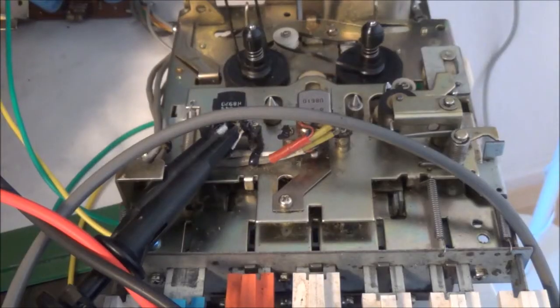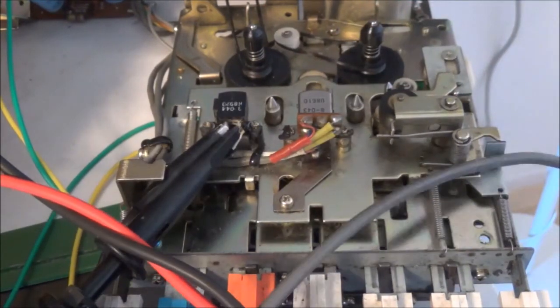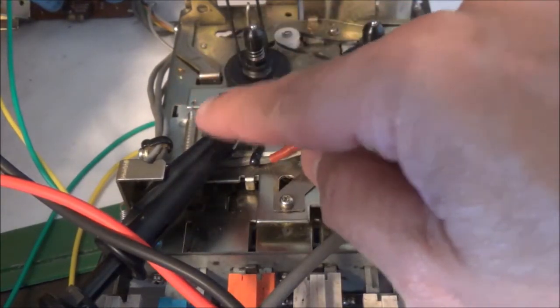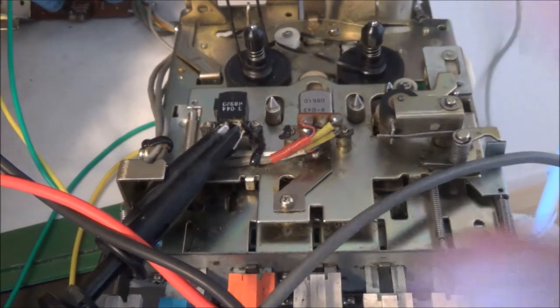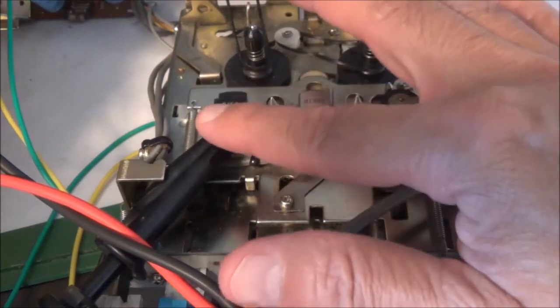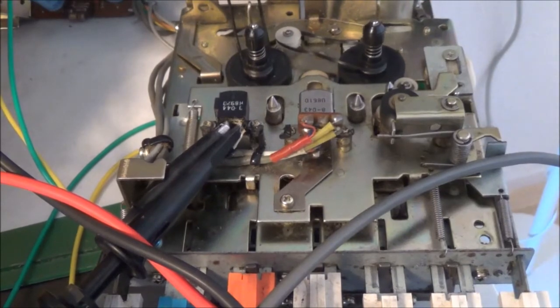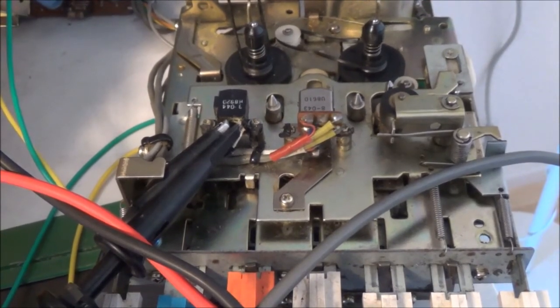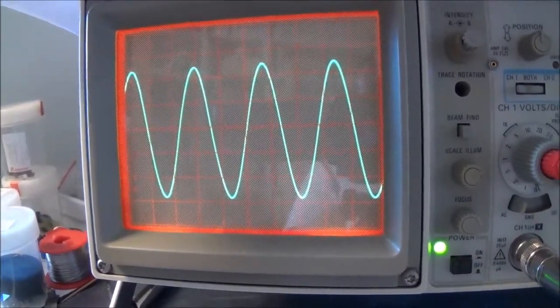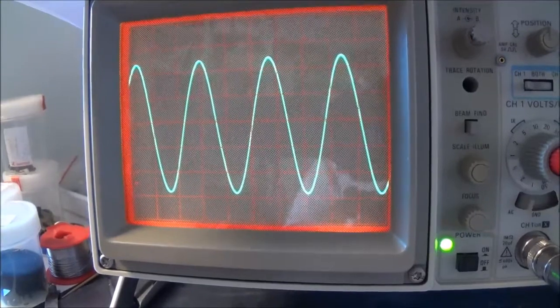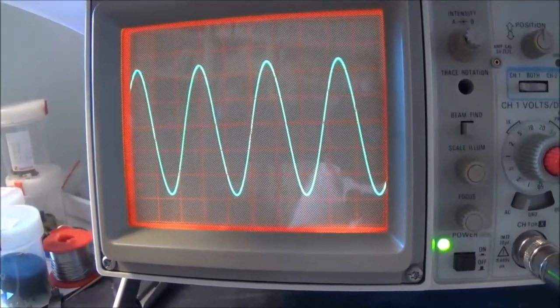Here is the scope probe hooked up across the erase head. I'm only going to be able to see this signal if the machine is in record. Here's the actual waveform, this is a nice clean sine wave. We don't want to see any kind of distortion because that means our machine has got problems.